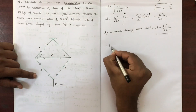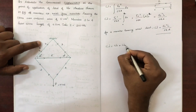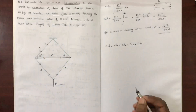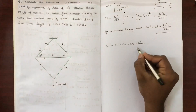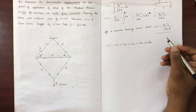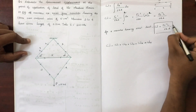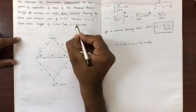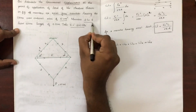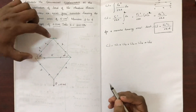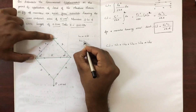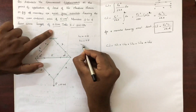The total strain energy U is equal to U1 plus U2 plus U3 plus U4 plus U5. Remember, members 1 to 4 have the same length of 0.5.